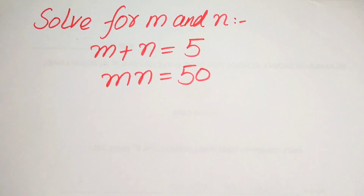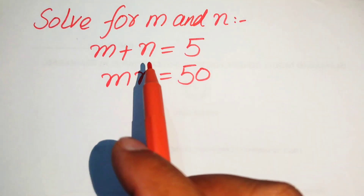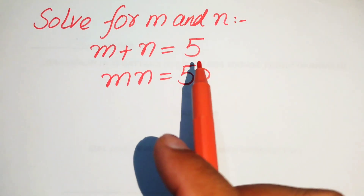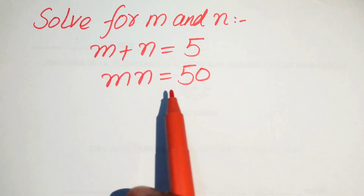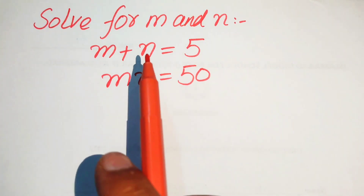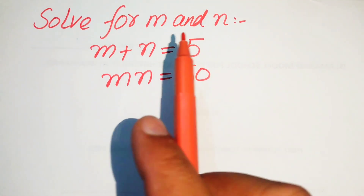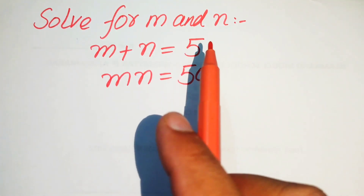Hello everyone, welcome. We will solve this algebra problem where m plus n equals 5 and m times n equals 50, and we solve for the values of m and n.